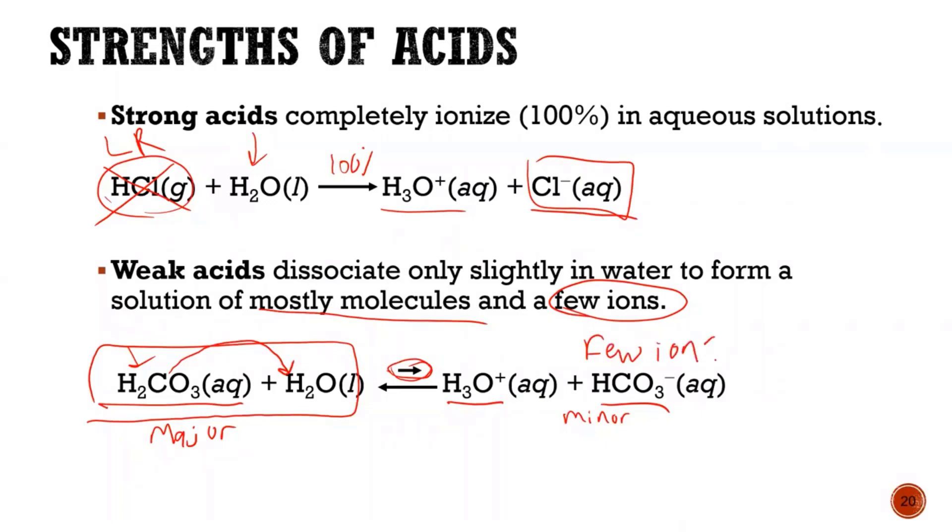So these are called minor species. Very few. I have very few bicarbonate ions. Very few. So because I don't have a lot of carbonate ions or bicarbonate ions, this is considered weak. It doesn't do a very good job of giving me a lot of the H pluses donated to water, which is hydronium.